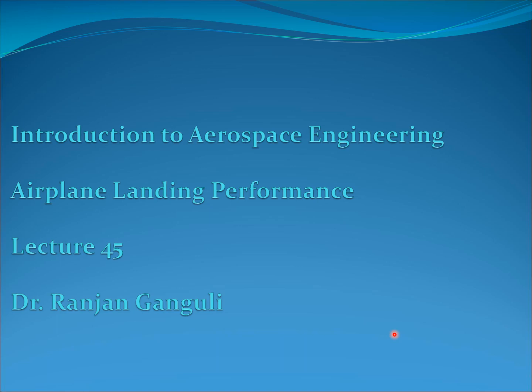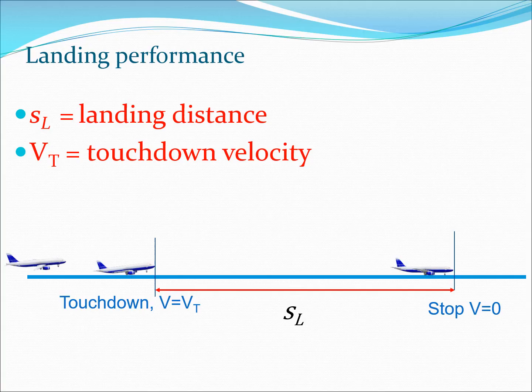Hi students, today we are going to start lecture 45 in our aerospace engineering course. I'm Dr. Ranjan Ganguly, and today I'm going to discuss airplane landing performance. During landing, the aircraft is flying in air and the pilot progressively brings it down towards the runway, touching down at a velocity we call v_T, the touchdown velocity.